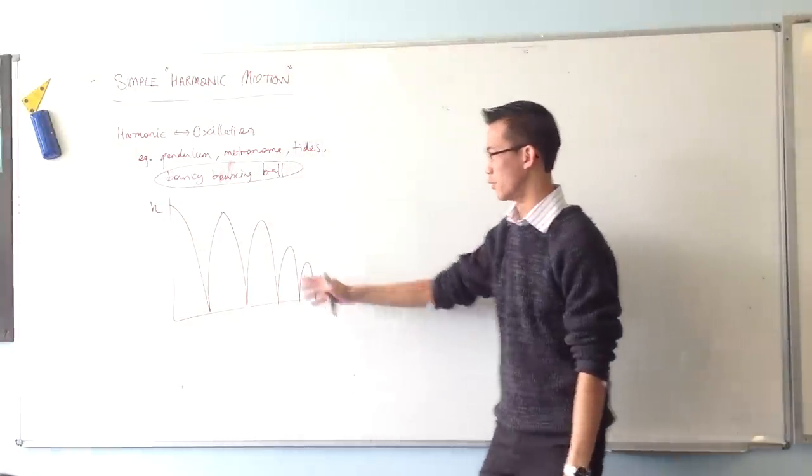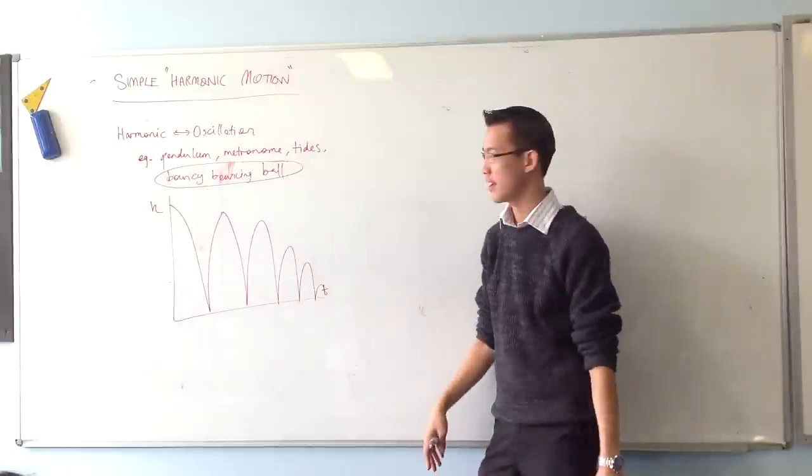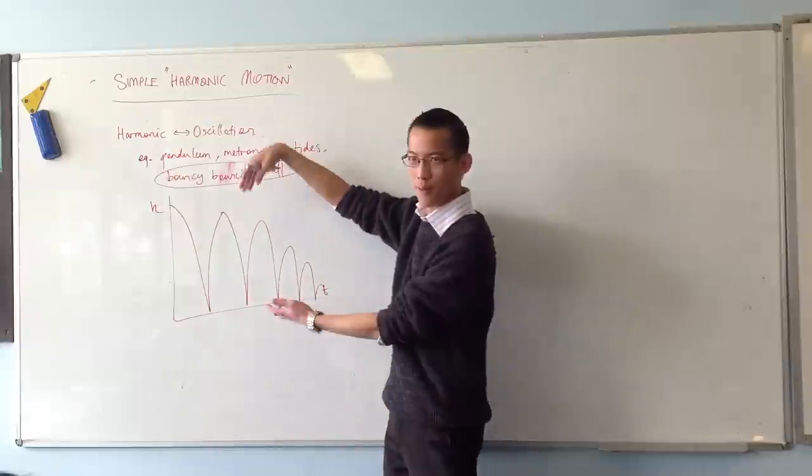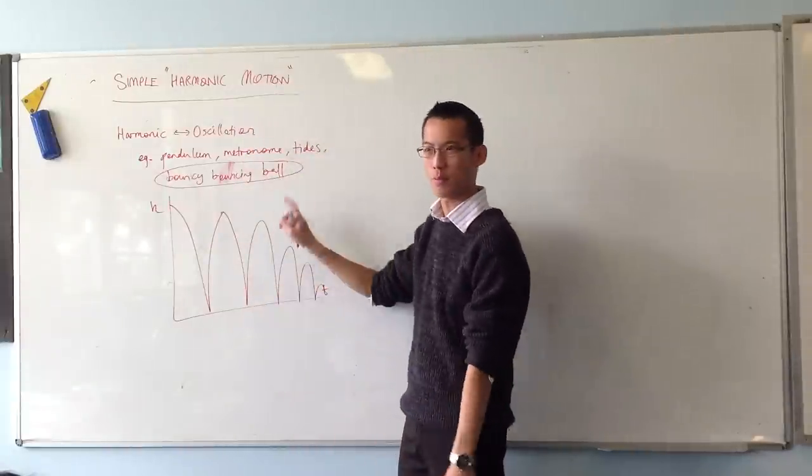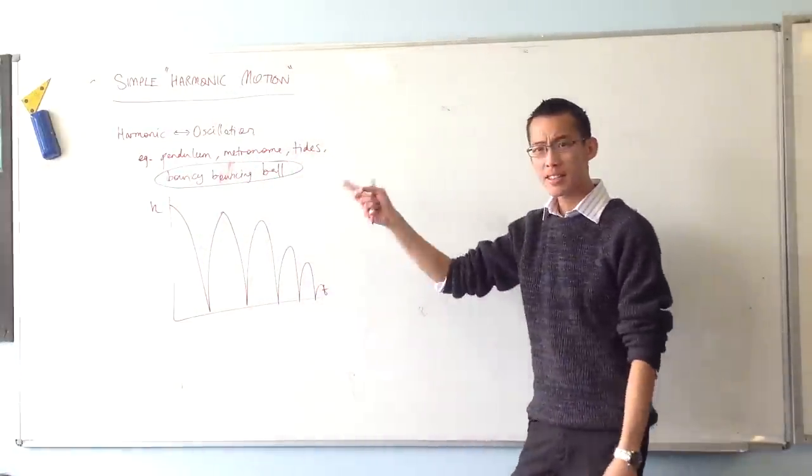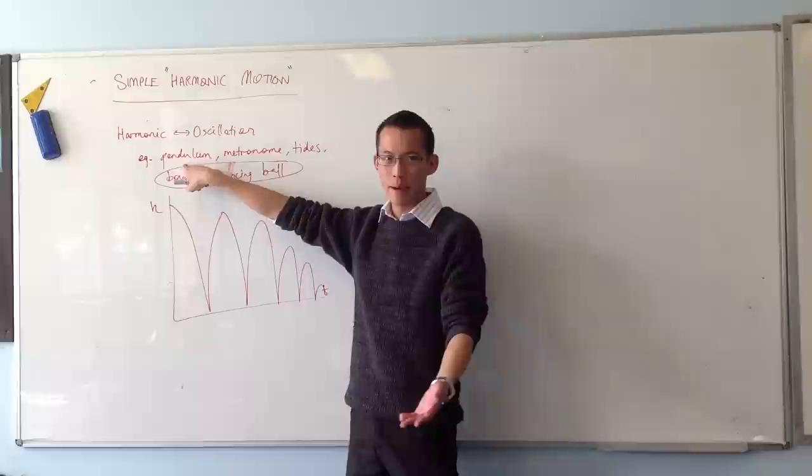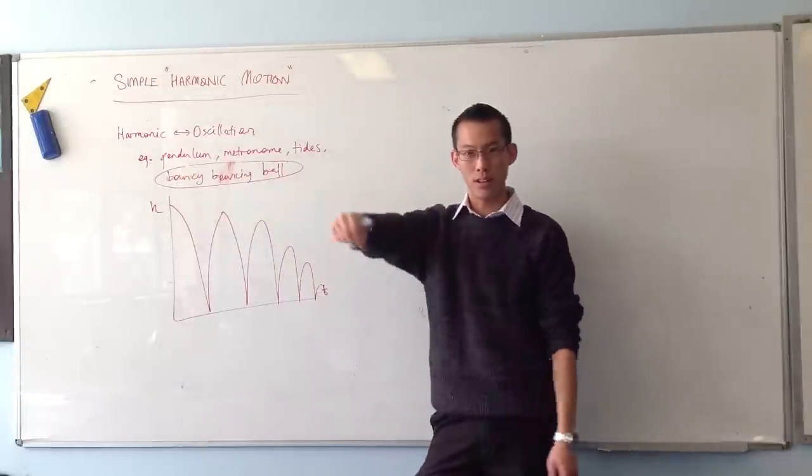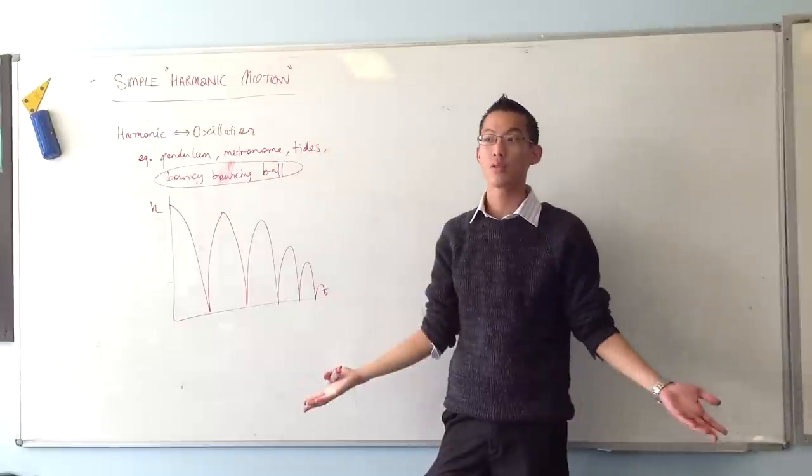Now, this kind of process of losing energy is often called damping. So this is complex motion in that it's got other forces acting on it, not just this back and forth business. In the same way, a pendulum, like a real pendulum, actually has got air resistance on it. So if you pull it, and then you let it go, eventually it'll stop.